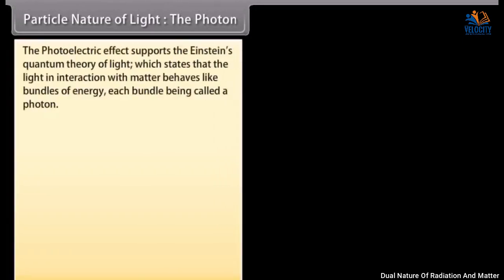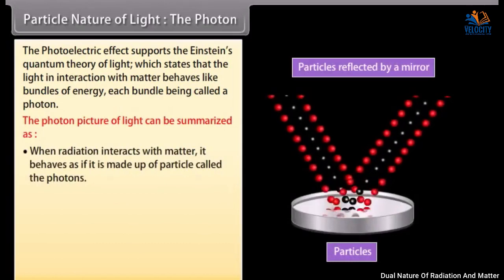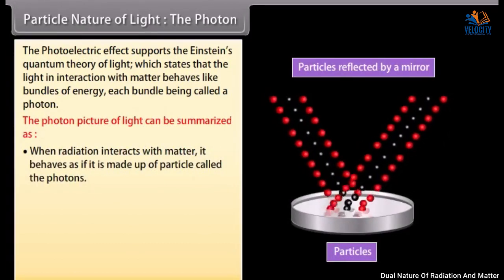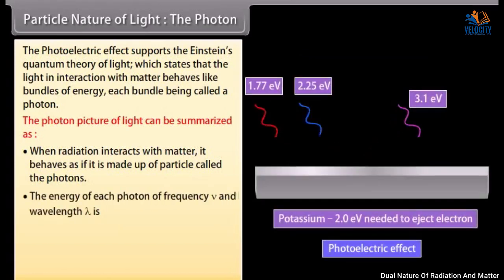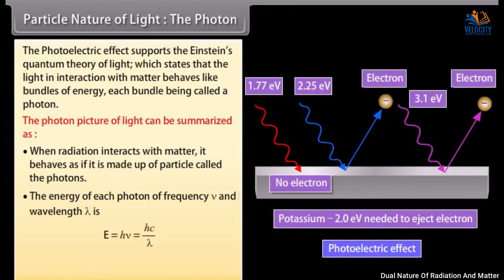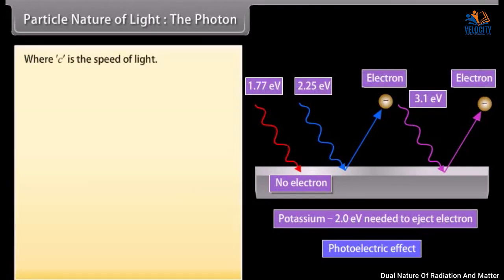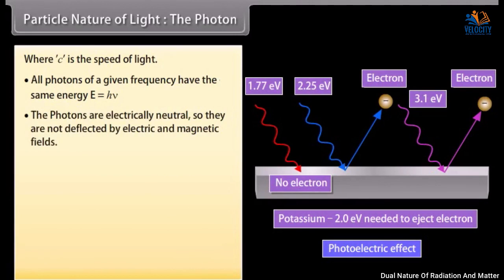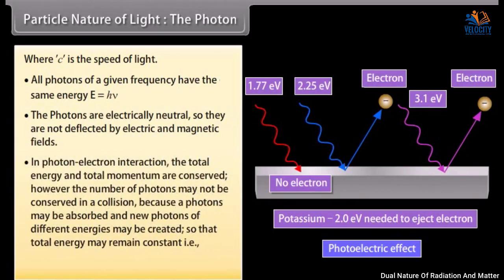The photoelectric effect supports Einstein's quantum theory of light, which states that light in interaction with matter behaves like bundles of energy, each bundle being called a photon. The photon picture of light can be summarized as: when radiation interacts with matter, it behaves as if it is made up of particles called photons. The energy of each photon of frequency ν and wavelength λ is E = hν = hc/λ. The momentum of a photon is p = hν/c = h/λ, where c is the speed of light. All photons of a given frequency have the same energy E = hν. Photons are electrically neutral, so they are not deflected by electric and magnetic fields.